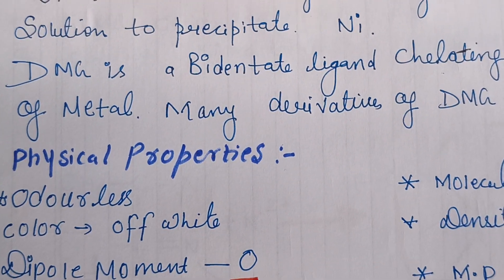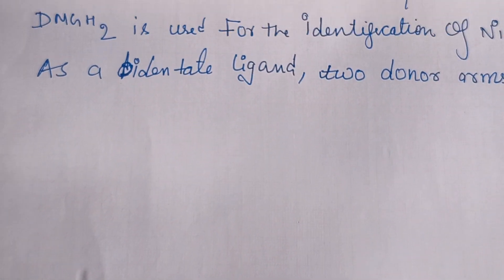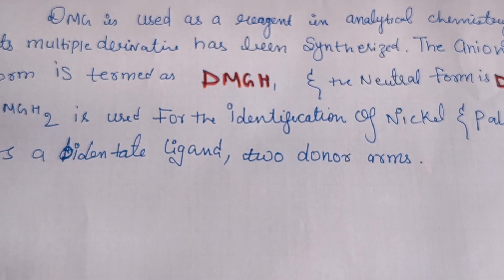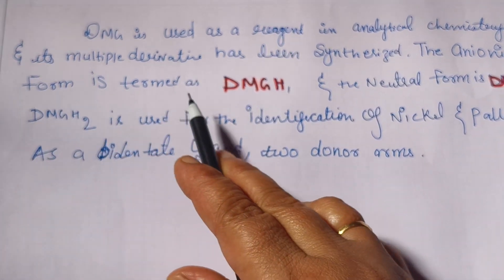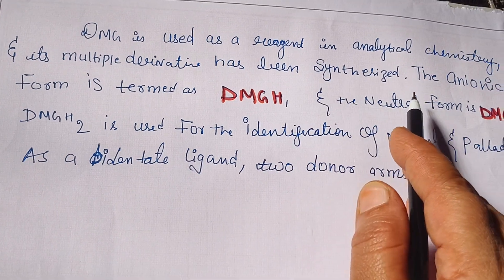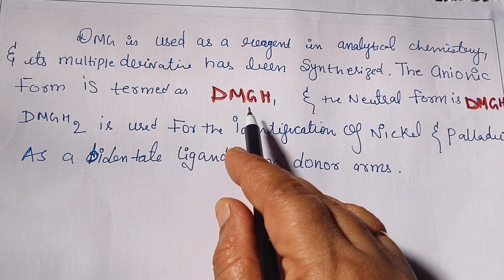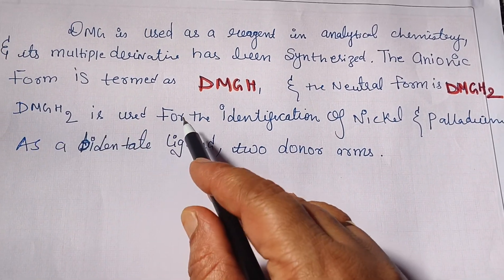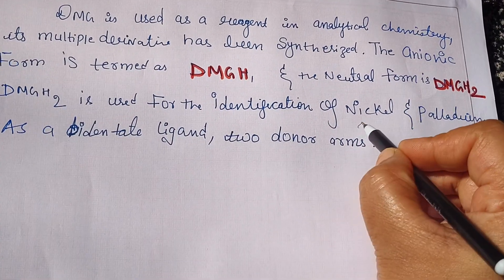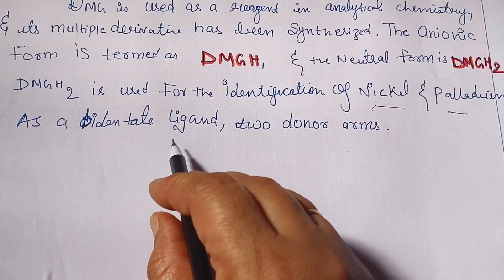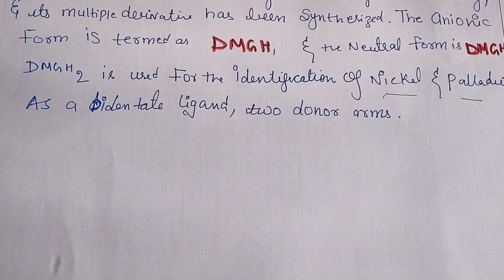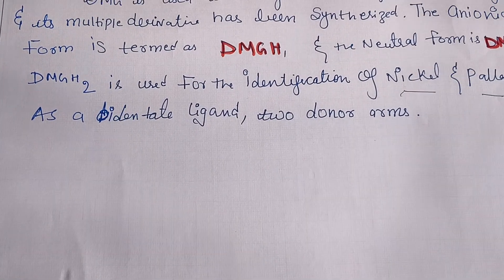DMG is a reagent in analytical chemistry and its multiple derivatives have been synthesized. The anionic form is termed DMGH and the neutral form is termed DMGH2. DMGH2 is used for identification of nickel and palladium as a bidentate ligand with two donor atoms. The two donor atoms are nitrogen, so it will bind with two donor sites as a bidentate ligand.